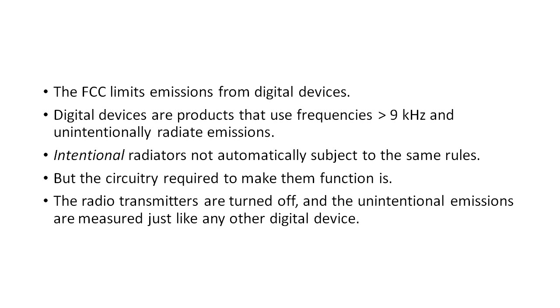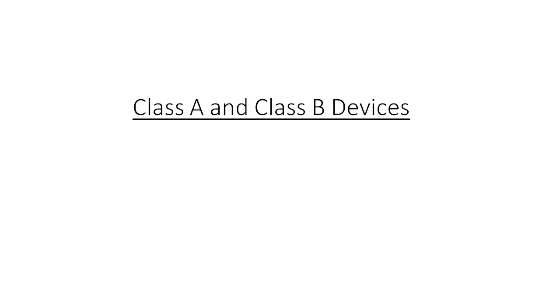An example would be a modern smartphone. The intentional broadcast frequency is measured in accordance with another set of rules, but then the radio device is turned off, and the phone's emissions are measured as if it were just a standard handheld computer. The FCC recognizes two categories of digital devices, Class A and Class B.